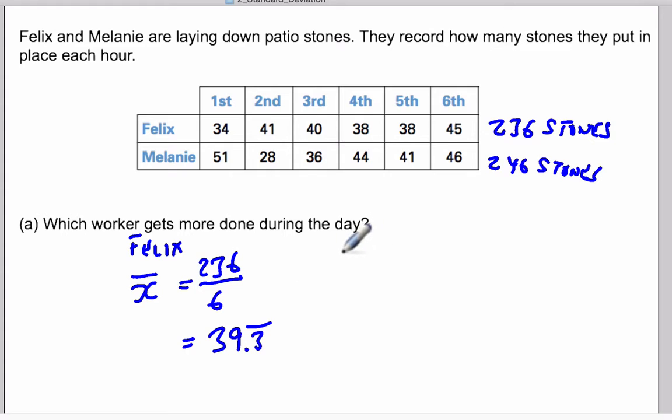For Melanie, the average number of stones that she puts down each hour will be equal to 246 divided by 6, which is 41 stones per hour.